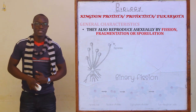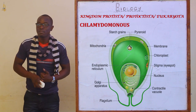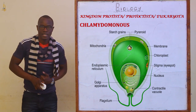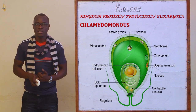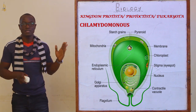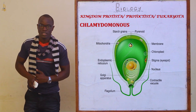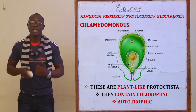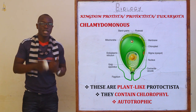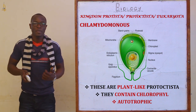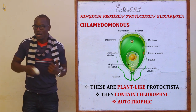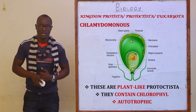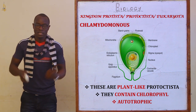Let's look at the first organism under this kingdom, which is a single-cell algae referred to as Chlamydomonas. As you can see, this is the Chlamydomonas. For Chlamydomonas, you can see that they are plant-like Protoctista. They contain chlorophyll and they are autotrophic, meaning that they make their own food from the surrounding light in the environment.